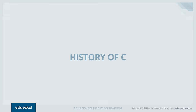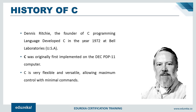Without wasting much time, let us quickly dive into the history of C programming. As we all know, Dennis Ritchie is the founder of C programming language. Prior to C, there were many other languages such as B, COBOL, ALGOL, and many more, which were machine-level languages and made it very difficult to develop the Linux operating system. This was the reason Dennis Ritchie founded C programming language in the year 1972 at Bell Laboratories, USA. C was originally implemented on the DEC PDP-11 and is well known to be flexible, versatile, user-friendly, and highly readable.